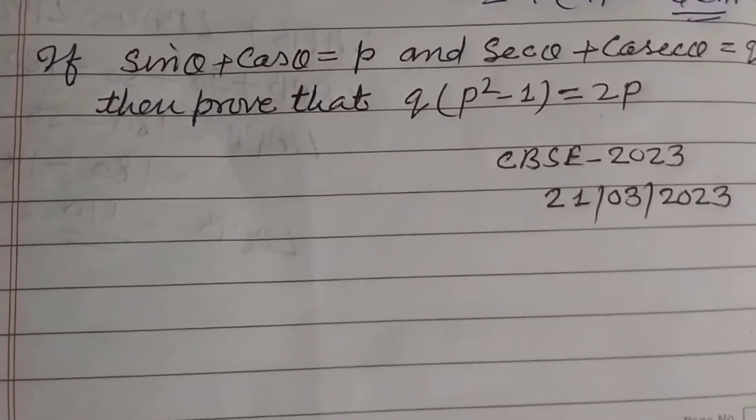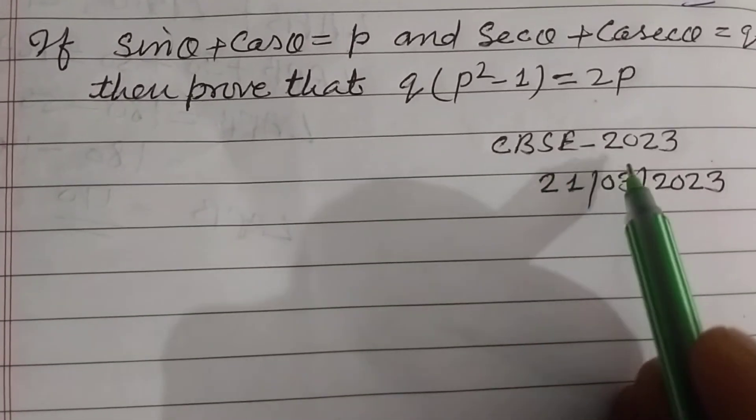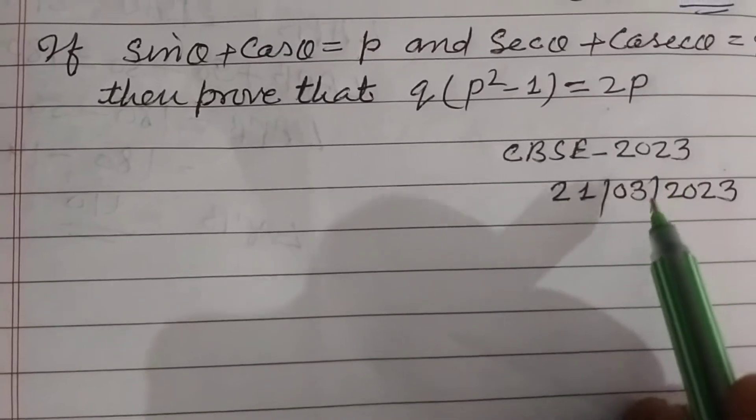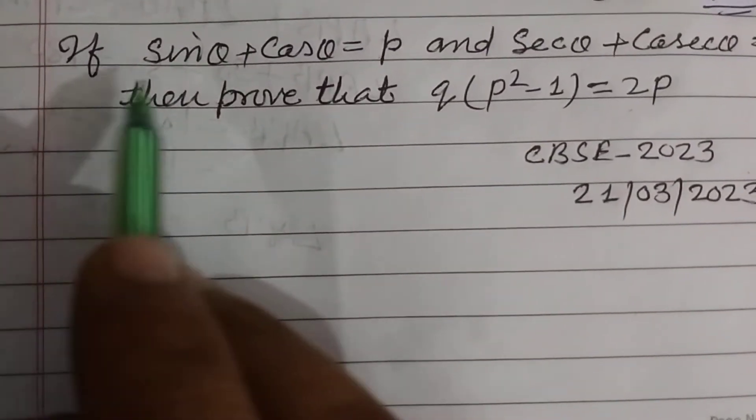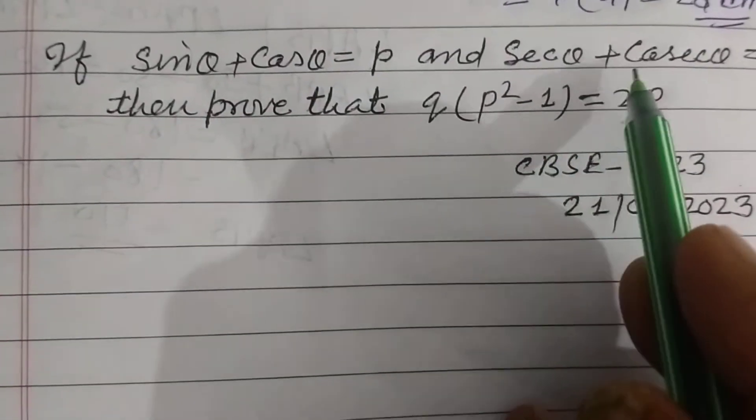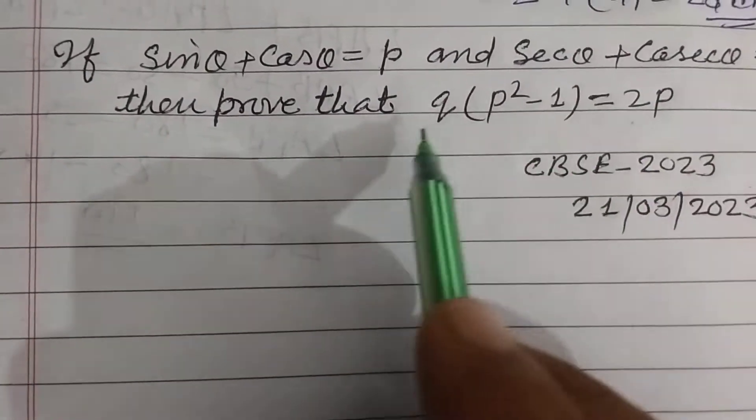Hello students, warm welcome to this YouTube channel. Question from CBSE Class 10 Board Exam 2023, held on 21 March 2023. If sin θ plus cos θ equal to p and sec θ plus cosec θ equal to q, then prove that q(p² - 1) = 2p.